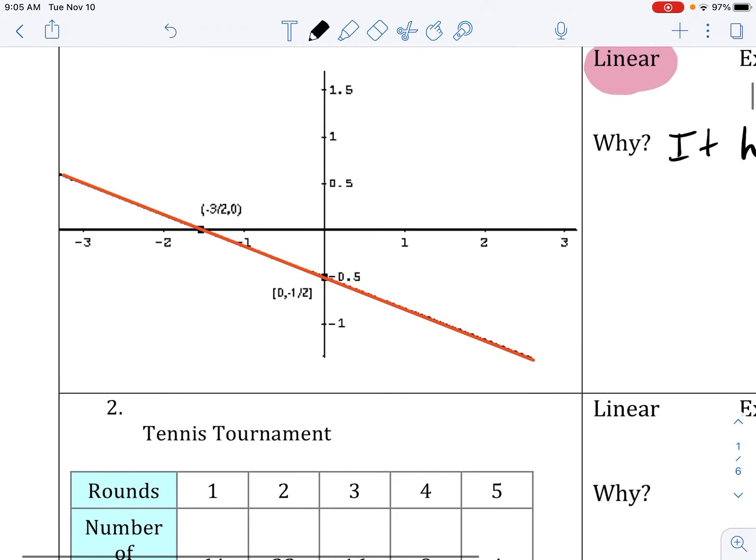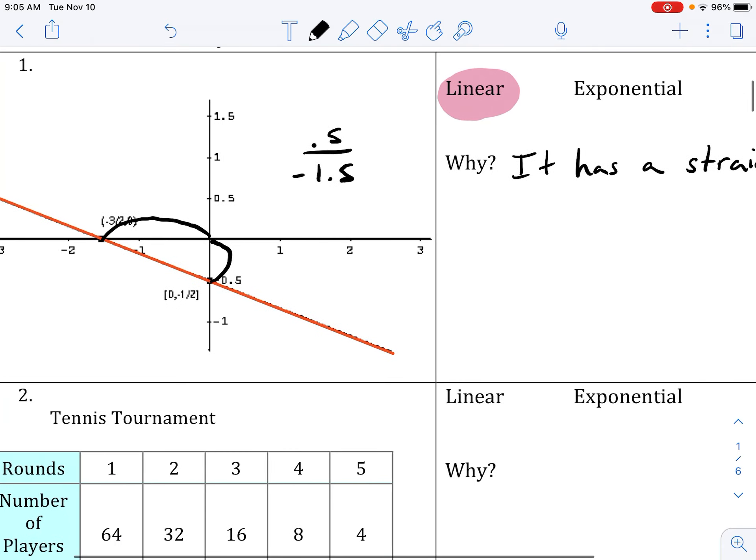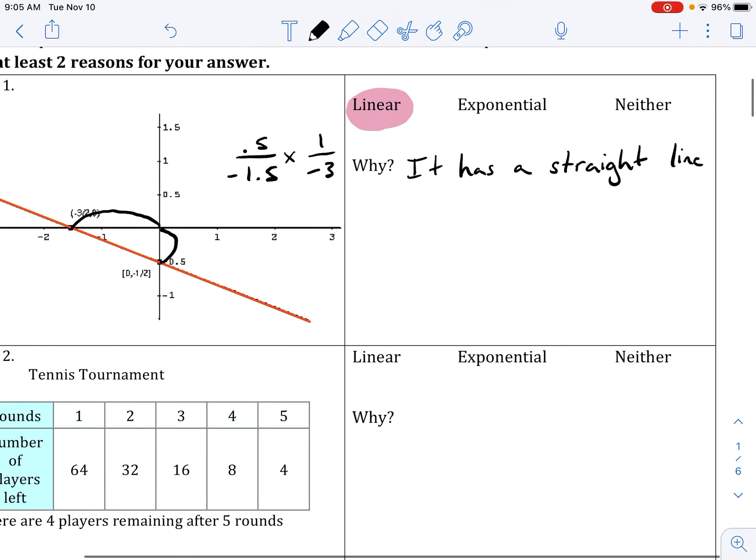We could also find the rate of change. So for example, if I was to go up a half, the rise would be 0.5, and then to the left one and a half, that'd be negative 1.5. And so if we multiply that by 2 we would get 1 over negative 3. So we could say it has a common difference of minus one third.